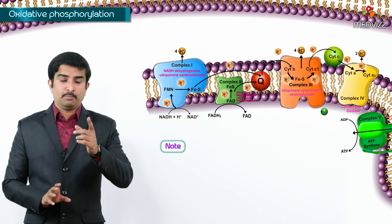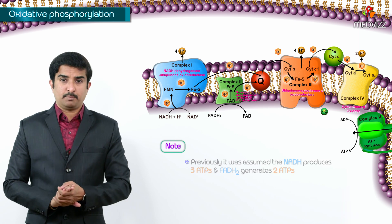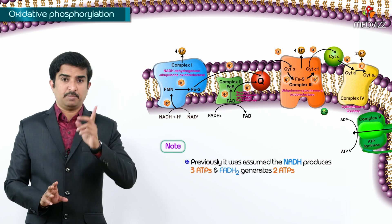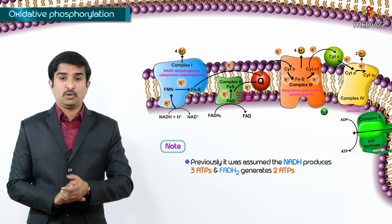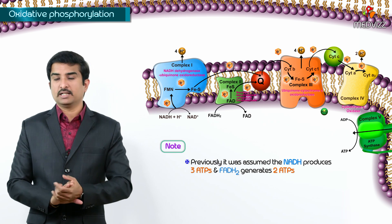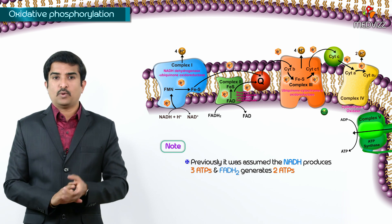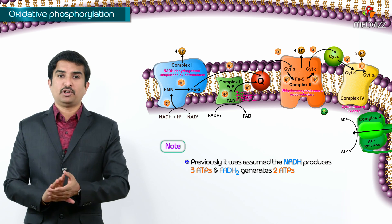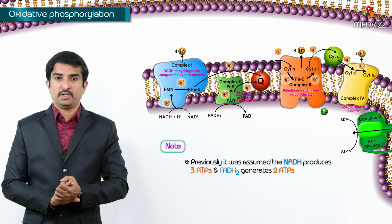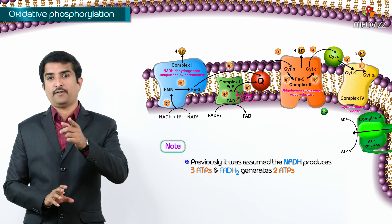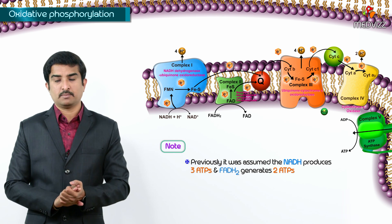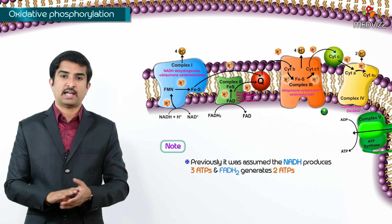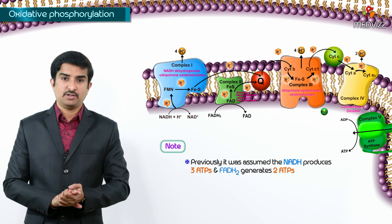Note an important point: previously in older textbooks it was assumed that 1 NADH produces 3 ATP and 1 FADH2 produces 2 ATP, but these values have been updated.